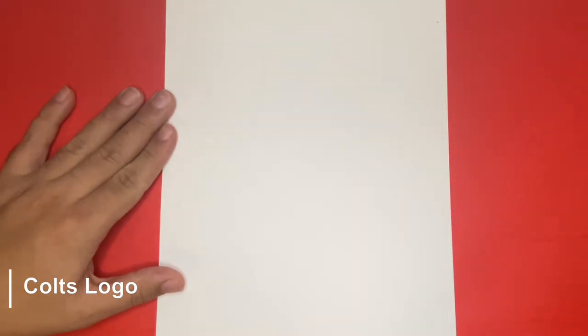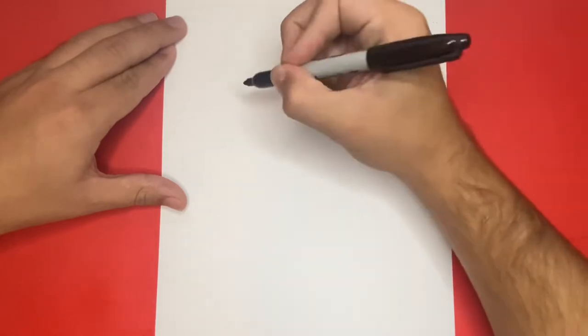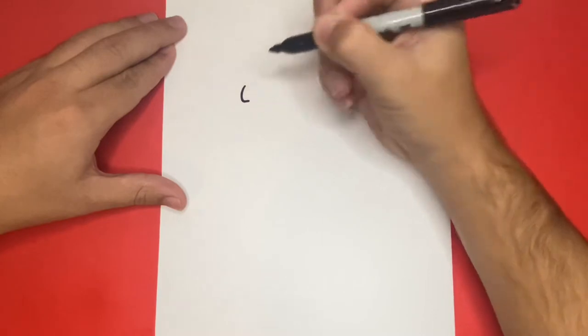So for the first step, let's begin by drawing the top left and right hand parts of the horseshoe. Let's start on the left hand side and draw a small L line to begin. We'll do this for both sides.